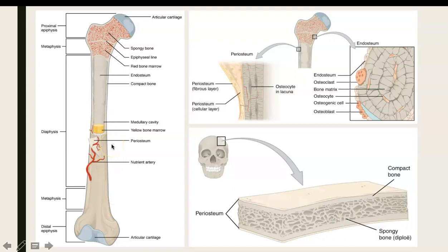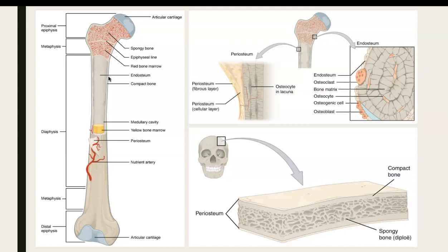If you've done any of the lab already, we often refer to the long bones as having a head, which is typically the end of the bone, and then a neck, and then a shaft. That's fine if you're just looking at the gross anatomy of a whole bone with no regard to what's on the inside. But if you begin to dissect the bone and look at the features on the inside, then we use a different set of terminology to recognize the sections of the bone.